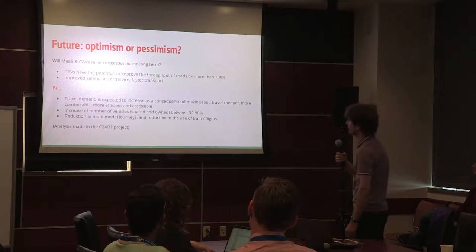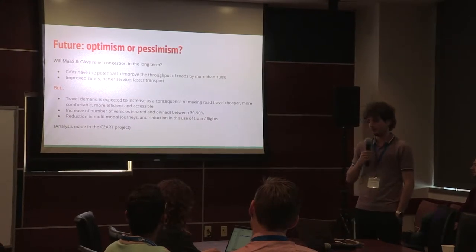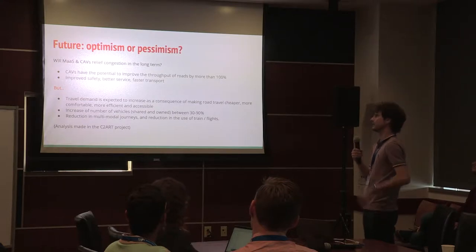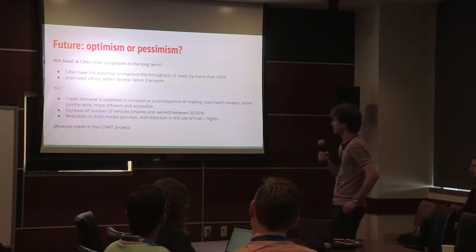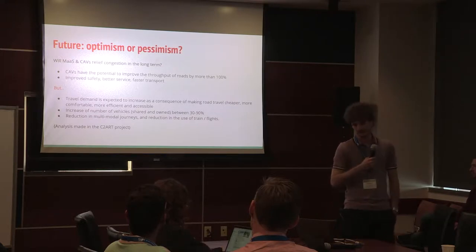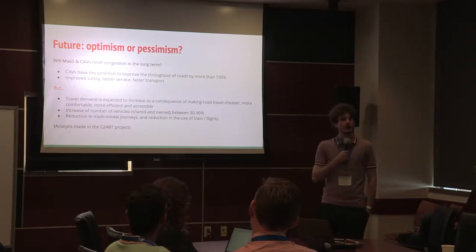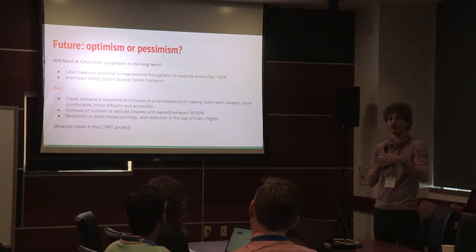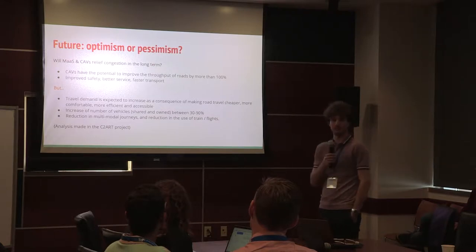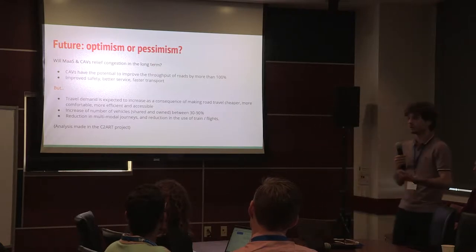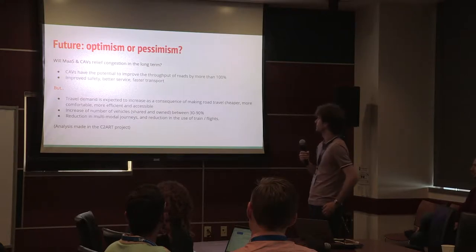On the other hand, according to an analysis by the C2R project, mobility as a service and connected autonomous vehicles may actually worsen traffic. Travel demand is expected to increase because mobility as a service is more comfortable, leading to more vehicles. You may have noticed how many Uber or Lyft vehicles are on the road — those vehicles wouldn't exist if we weren't using mobility as a service. They are already increasing vehicle numbers and this is expected to explode in the next few years.